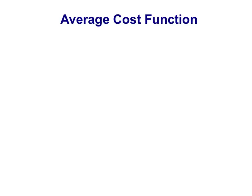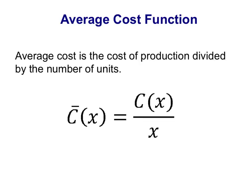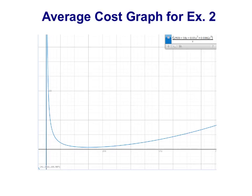An important measurement in marginal analysis is the average cost, and so we're going to investigate the average cost function. Like most averages, the average cost is the cost of production divided by the number of units. Here we're showing the average cost function as a graph for example 2 from the previous video. We've just taken that function, divided by X, and then looked at the graph.